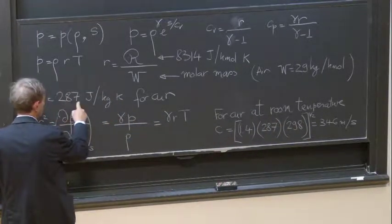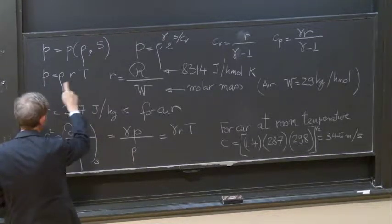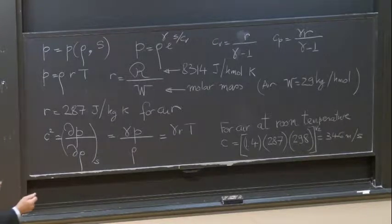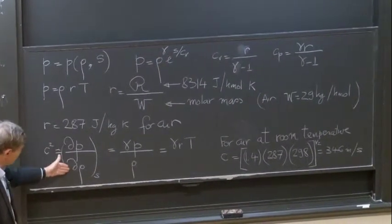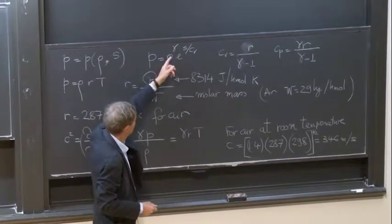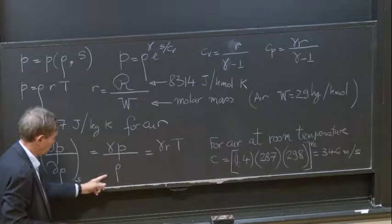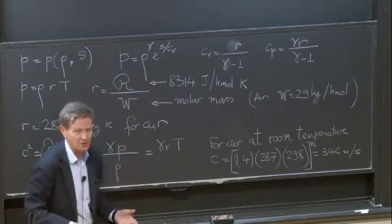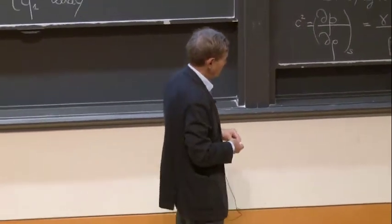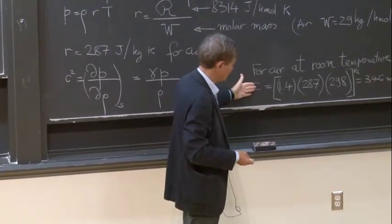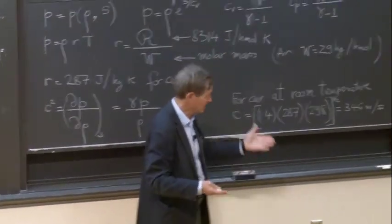So R is equal to 287, which is very useful for engineering calculations. You can immediately calculate things like the density of air for a given pressure and temperature. C squared is dP/dρ at constant S. When you derive this with respect to ρ, it gives γρ^(γ−1) e^(S/Cv), which is γP/ρ. And γP/ρ, using the ideal gas law, is γRT. This expression is familiar from compressible fluid mechanics. You can evaluate the speed of sound in air, which at room temperature is 346 meters per second. If the temperature increases, the speed of sound increases like the square root of the temperature, which happens in flames.